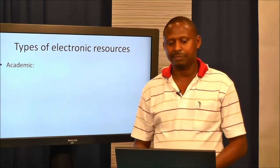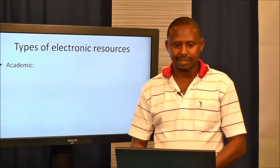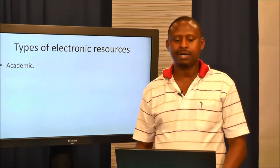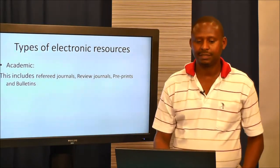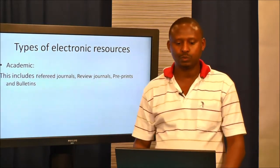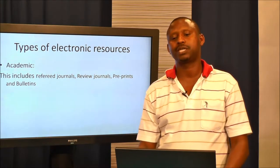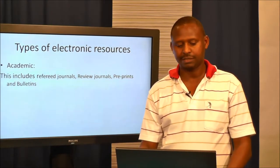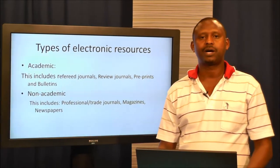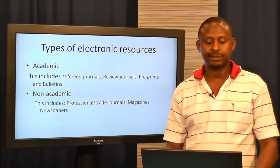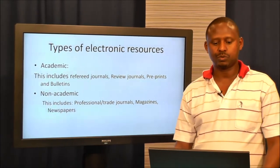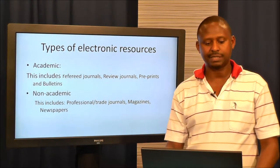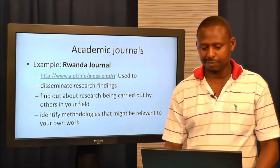Among types of electronic resources, some are academic. These include refereed journals, review journals, preprints, and bulletins. But also we have non-academic resources, which include professional trade journals, magazines, and newspapers.